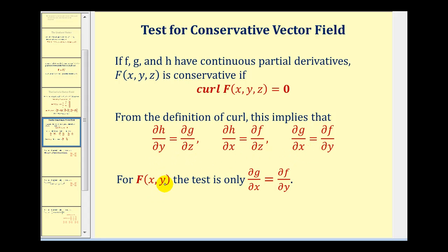If the given vector field is in R2, or two-dimensional, that three by three determinant is simplified, and we only have to check to see if the partial of g with respect to x is equal to the partial of f with respect to y.